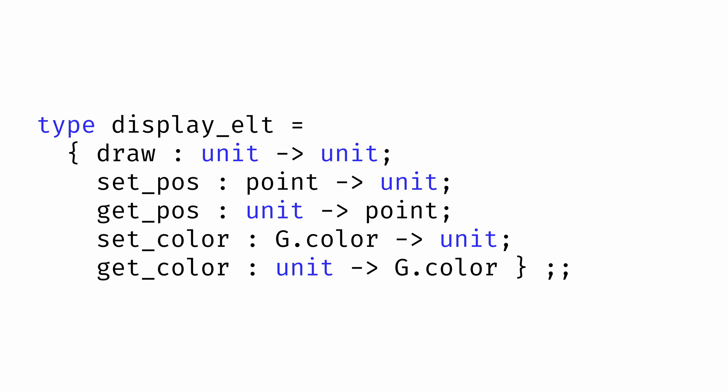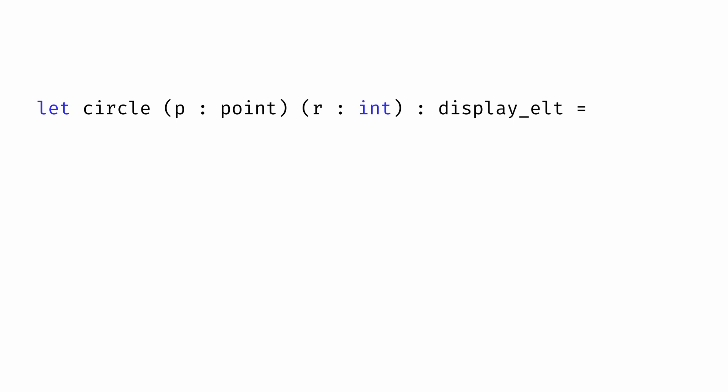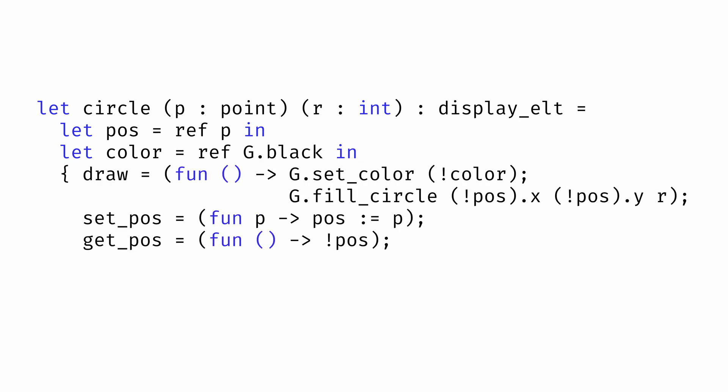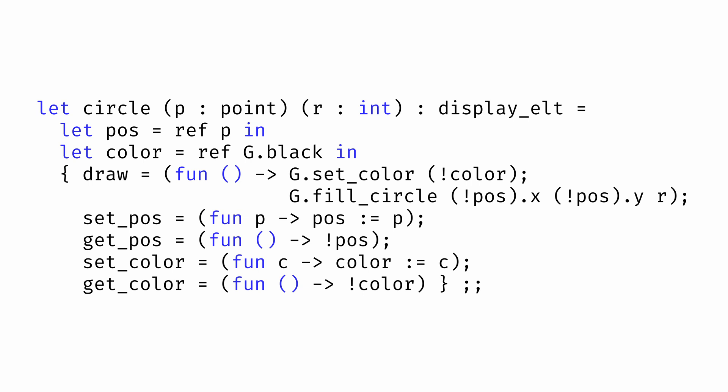References end up being a good solution to this problem. For example, we could define our function circle to accept a point p and a radius r and return a display element. When the function is called on a particular point and radius, we first define references to the circle's position and color, and we use those references in the record the function returns. To get the position or color, we dereference the corresponding reference and return the value stored. And to set the position or color, we update the value stored at the corresponding reference. These references are defined inside the body of the circle function, so every time the circle function is called — every time we generate a new circle object — we'll get new references that only that circle has access to.